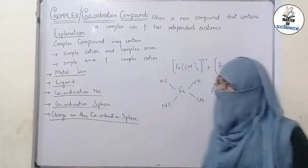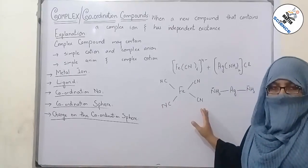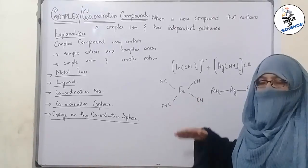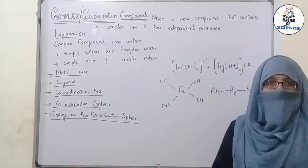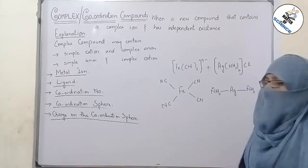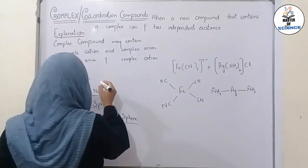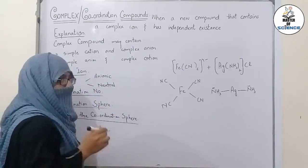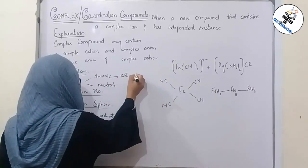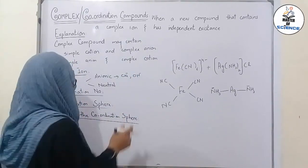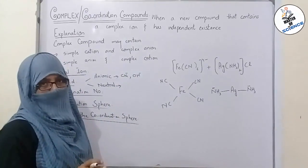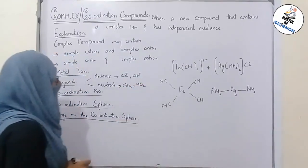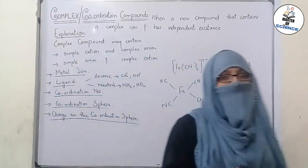The next term is ligand. Cyano groups are attached to the central metal ion and donate electron pairs to it. Those species which donate electron pairs to the central metal atom or ion are called ligands. Ligands are of two types: they may be anionic — containing a negative charge, such as CN⁻ or OH⁻ — or they may be neutral, meaning they carry no charge, such as NH3 or NO2.